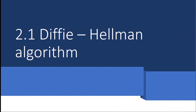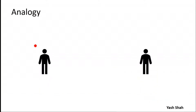We have understood why we use this algorithm — we use it to exchange our key. Now let us understand how it works. There are two people, Alice and Bob. Alice wants to give a key to Bob.